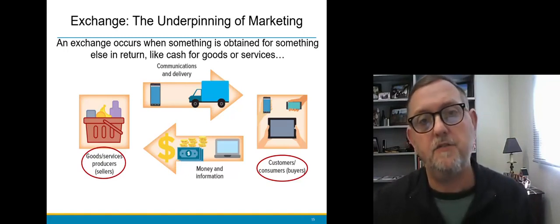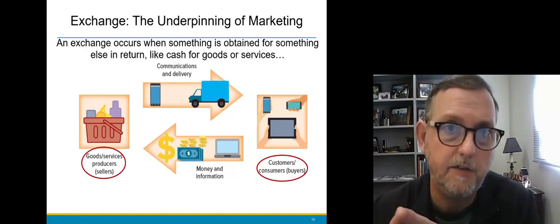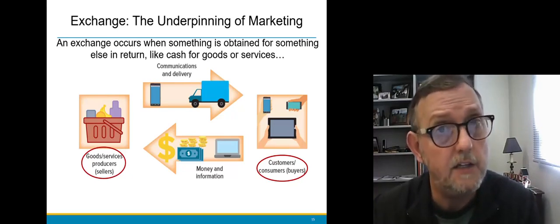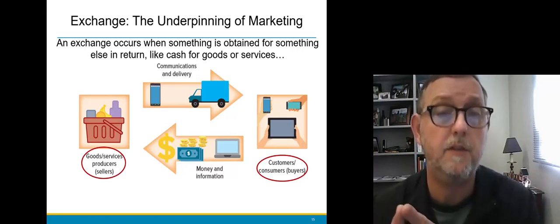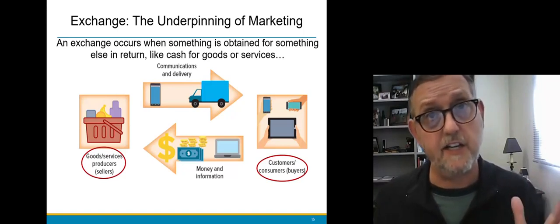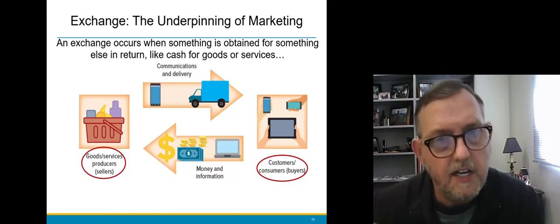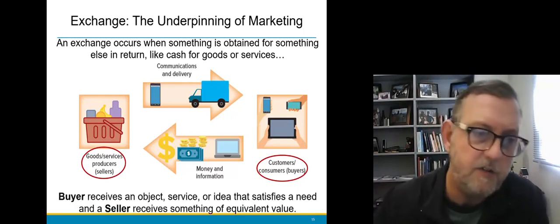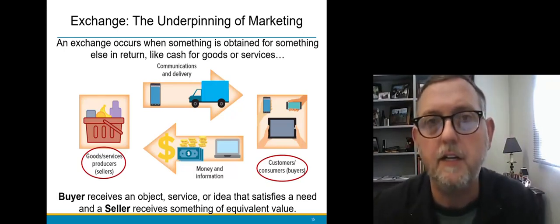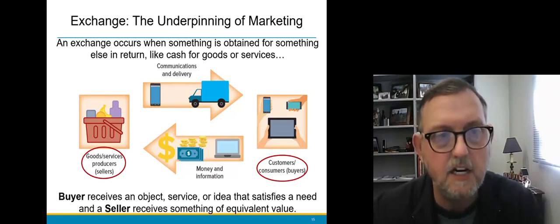Money and information from the customer then comes to the seller. The customer receives value that has been delivered and communicated to them, and they define that value as the benefits they receive, which satisfy their need and want. The seller receives money and information from the customer — that's the exchange that's happening. The customer is getting something and the seller is getting something, and they agree to trade. Buyers receive an object, service, or idea that satisfies a need. The seller receives something perceived as equivalent in value.